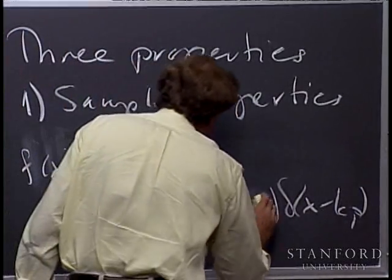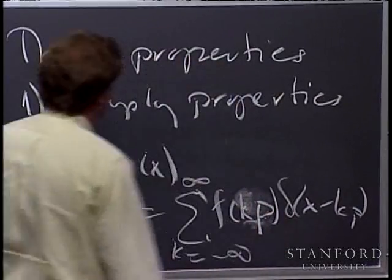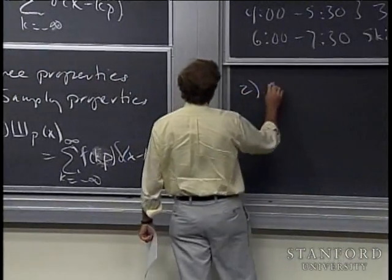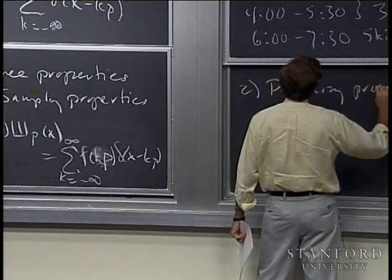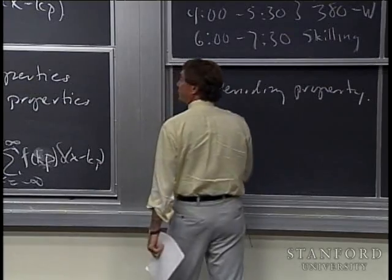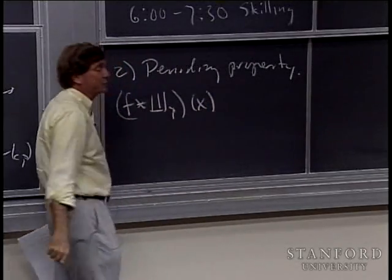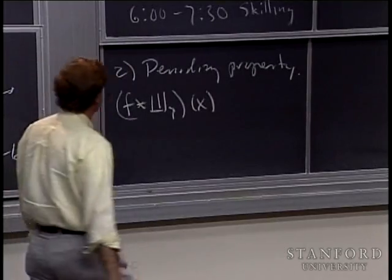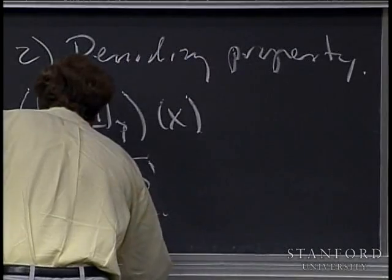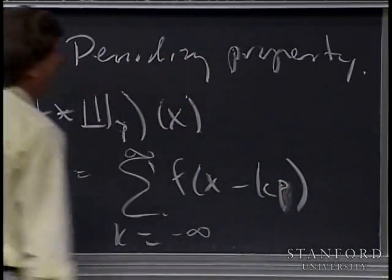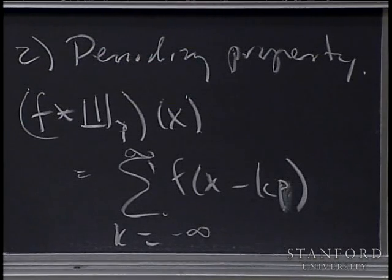Aligned with that — sort of the flip side — is the periodizing property. That has to do with convolution: if I convolve a function with the Shah function of spacing P, I get a periodic function of period P. That is, it's the sum of shifted versions of f: sum over k of f(x minus K·P), giving you a periodic function of period P. These two properties are flip sides of each other, and we'll see that very strongly today.